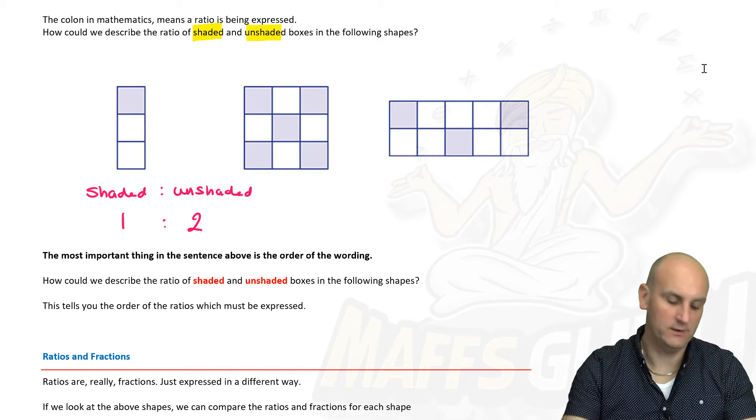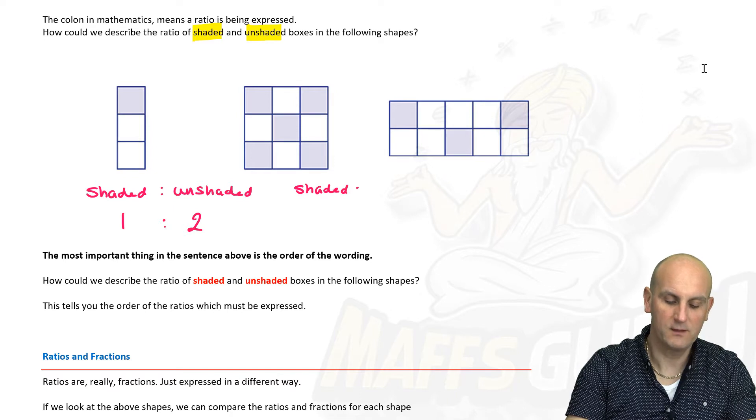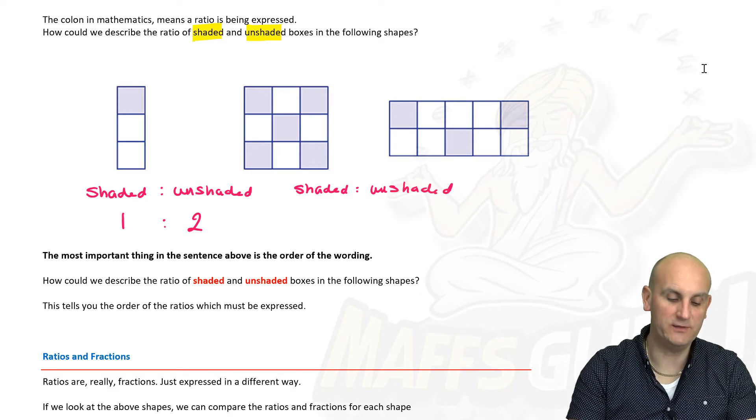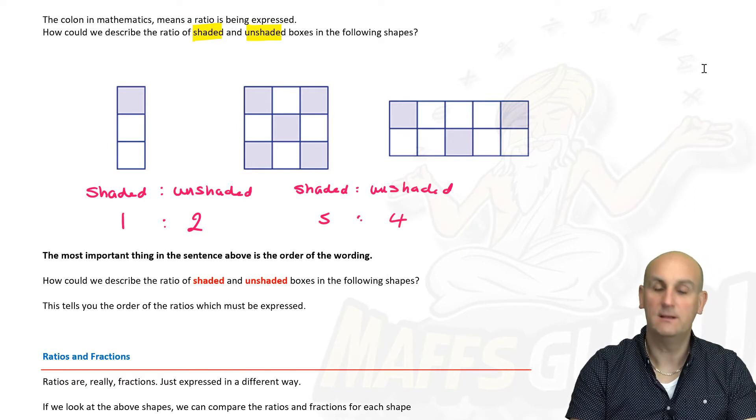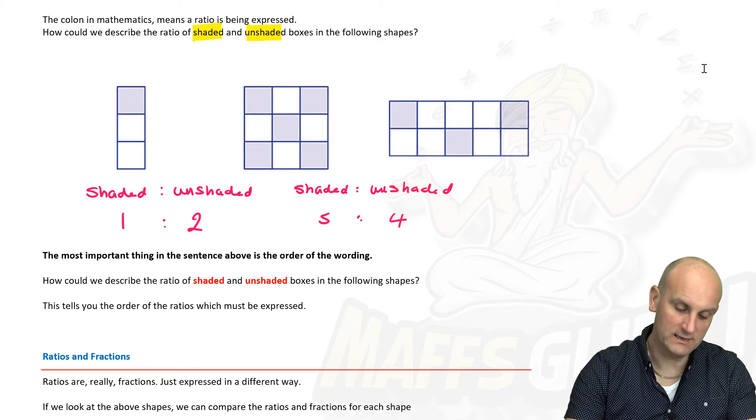What does it mean? It means for every one shaded box there are two unshaded boxes. Let's look at this one. Let's do shaded again, colon unshaded. How many shaded boxes are there? One, two, three, four, five. How many unshaded are there? There are four. Yeah, this is just counting! People think maths is hard.